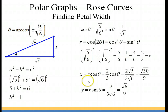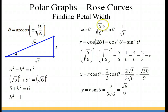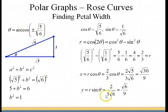Now we find our rectangular coordinates for point A. X equals r cosine theta: r is two thirds, multiplied by cosine theta which is the square root of five sixths. Rationalizing and simplifying gives the square root of 30 over nine. Y equals r sine theta: r is two thirds, times sine theta which is one over the square root of six. Rationalizing and simplifying gives the square root of six over nine.